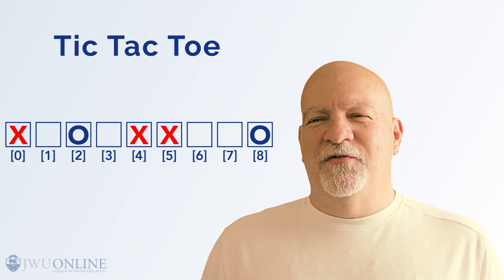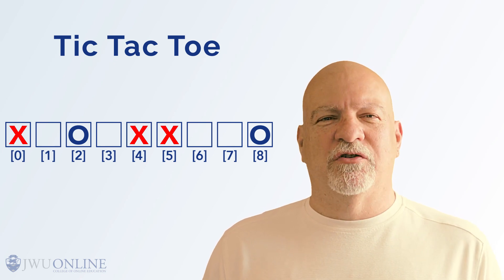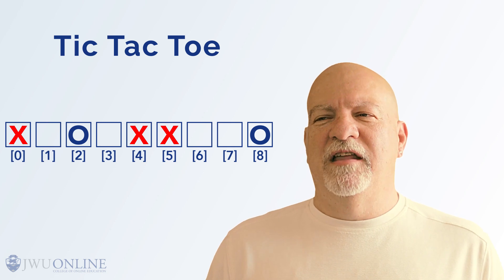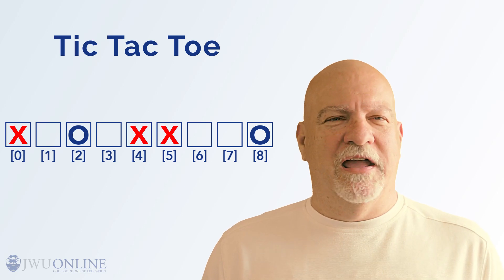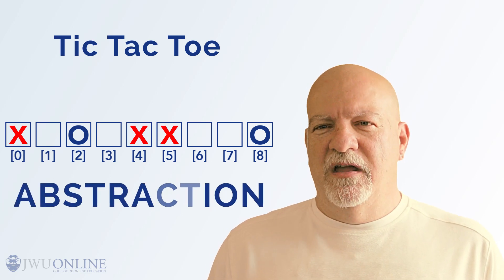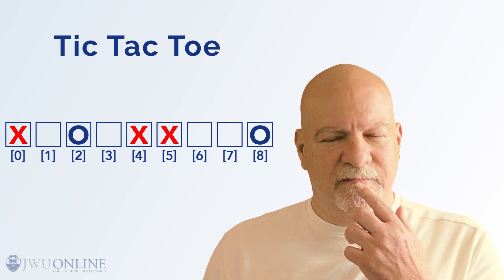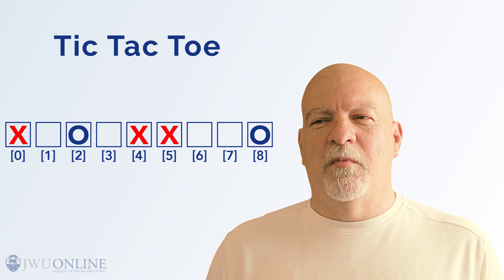What makes this so confusing is that we are playing at a level too close to the natural operating level of the computer. We are people, and we tend to think at a higher, more abstract level. There is that word again, abstraction. We need to make this more comfortable for the user. I've got it. Let's use Cartesian coordinates to mark our boxes.